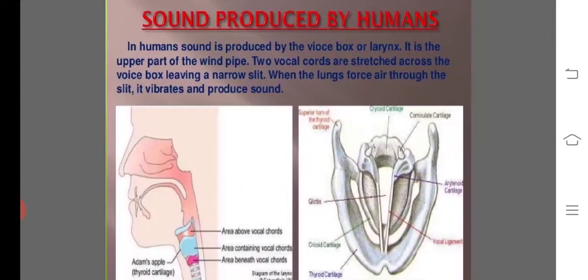Sound produced by humans. In humans, sound is produced by the voice box or larynx. It is the upper part of the windpipe. Two vocal cords are stretched across the voice box leaving a narrow slit. When the lungs force air through the slit, it vibrates and produces sound.